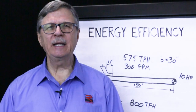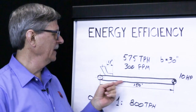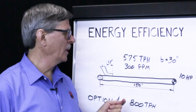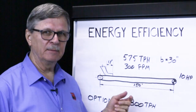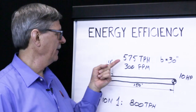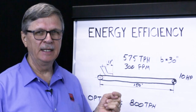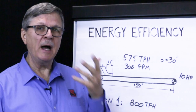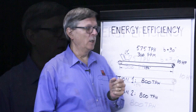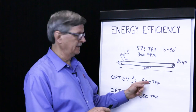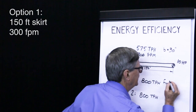A previous Romeka video showed how a 150-foot-long conveyor with a 30-inch-wide belt and a 10-horsepower drive system, originally installed to carry 575 tons per hour at 300 feet per minute, could be upgraded to handle 800 tons per hour. Option one recommended that the system be fully skirted while keeping a 300-foot-per-minute belt speed.